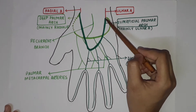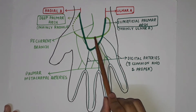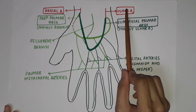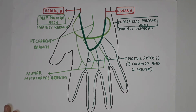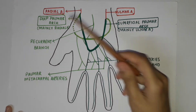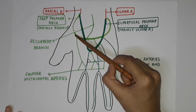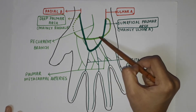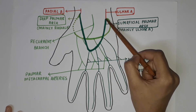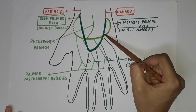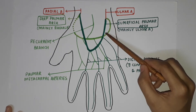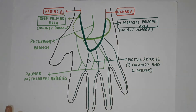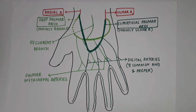The deep palmar arch — represented by this light green color arch — provides the second connecting channel between the radial artery and the ulnar artery. It is situated deep to the long flexor tendons, and hence it is called the deep palmar arch. The deep palmar arch is formed by the deep palmar branch of the radial artery, and medially it is joined by the deep palmar branch of the ulnar artery at the base of the fifth metacarpal bone.